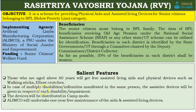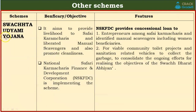Devices will be distributed to beneficiaries according to their disability in distribution camps. ALIMCO, which is the PSU under the Ministry of Social Justice, will also provide one year of free maintenance for the aids and assisted devices that have been distributed to these people.